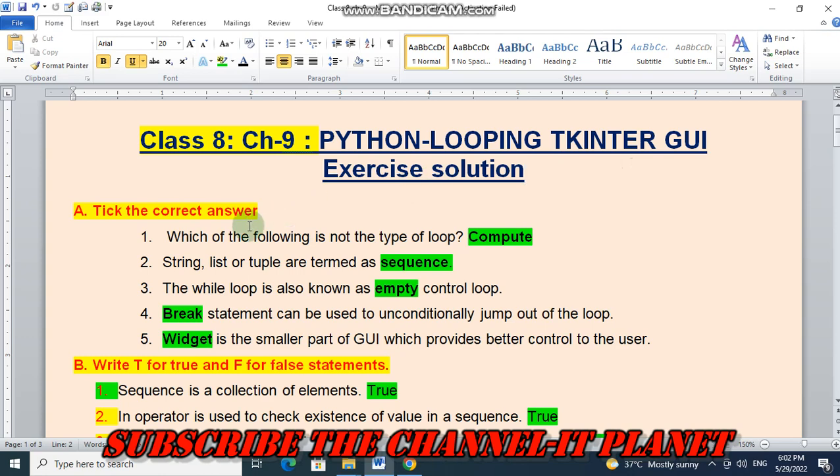So let's start the solution. First question, pick the correct answers. Which of the following is not the type of loop? And the answer is compute. String, list or tuple are termed as sequence. The correct answer is sequence.